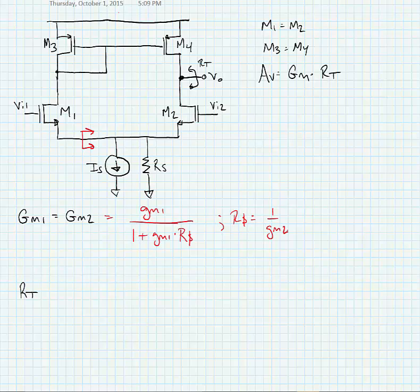So we can make a simple substitution, and we find that big GM1 and big GM2 are simply equal to GM1 over 2, little GM1 over 2.